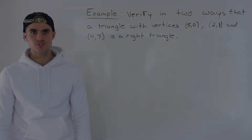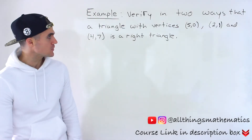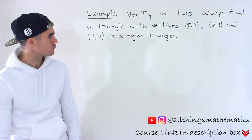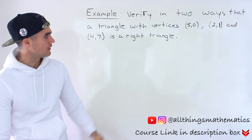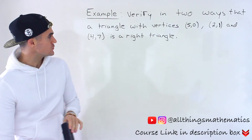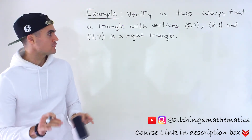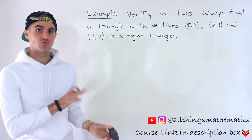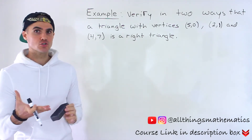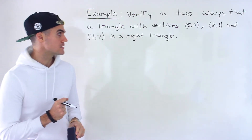Welcome back everyone. Patrick here, moving on to the next question. We have to take the triangle that has vertices (5, 0), (2, 1), and (4, 7) and we have to verify that it's a right triangle in two different ways.